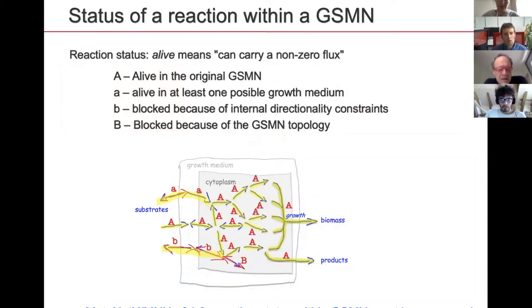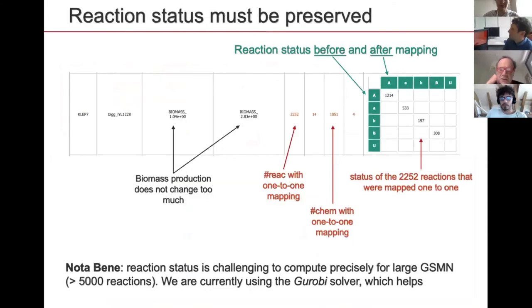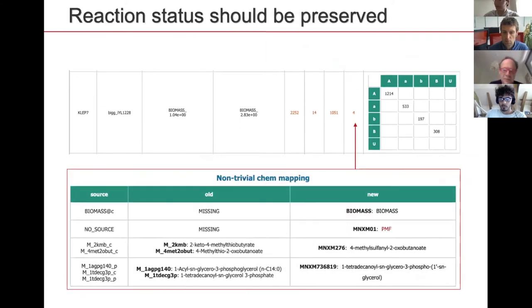The third line of evidence, introduced with the new release, involves running a variation of flux variability analysis on genome-scale metabolic networks to assign a status to every reaction. We then compare the status of reactions before and after mapping, trying to preserve it as much as possible. This approach works well even for metabolites not belonging to one-to-one mapping, where the reaction status could still be preserved.